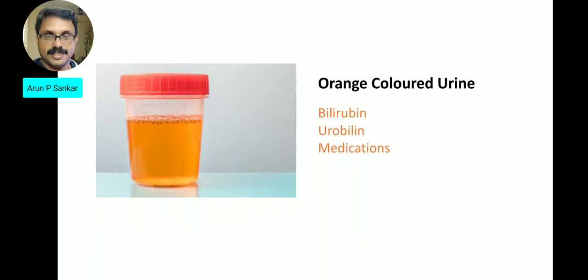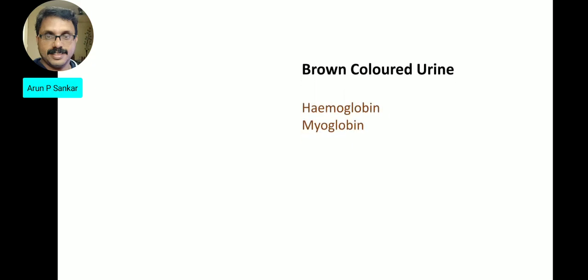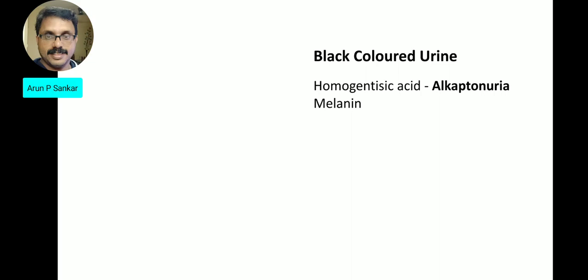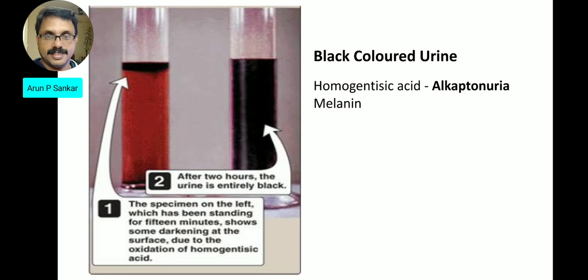Orange urine is associated with bilirubin, urobilin, or certain medications. Brown urine is associated with hemoglobin or myoglobin. Black urine is also seen in certain conditions.